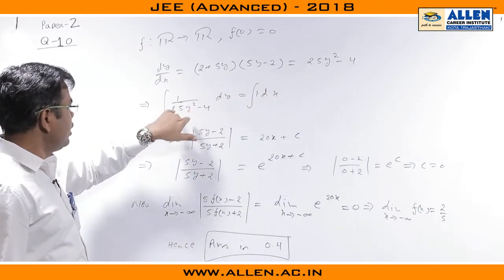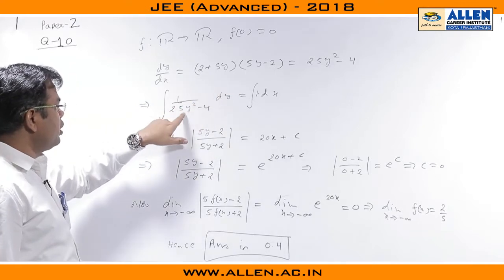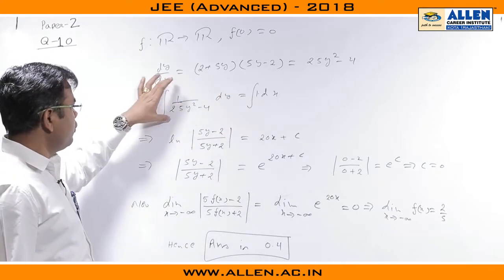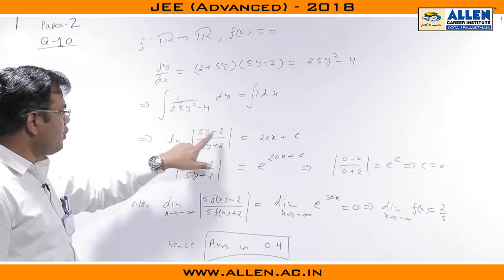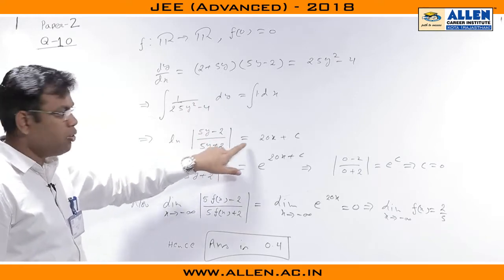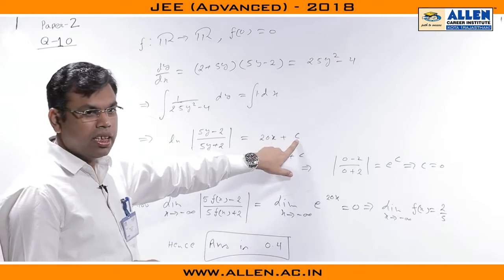Let us solve this differential equation by taking 25y² - 4 in the denominator and dx over here. If I integrate both sides, we will get ln((5y - 2)/(5y + 2)) equal to 20x + c. C is the integration constant.